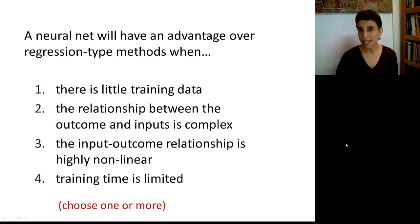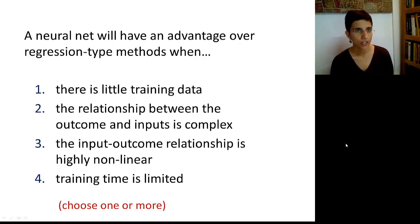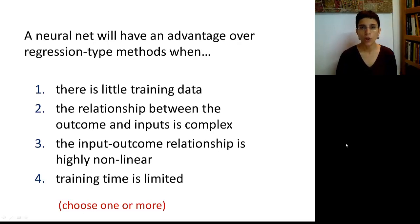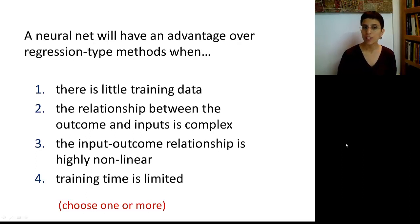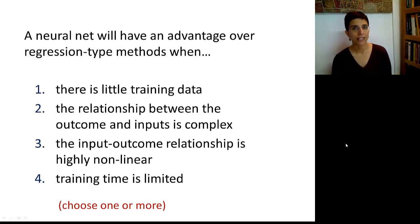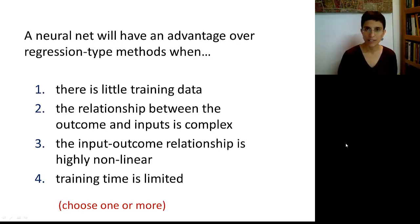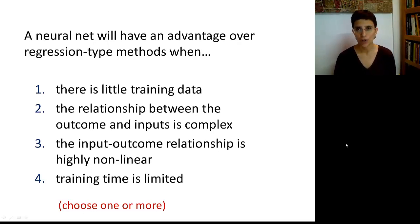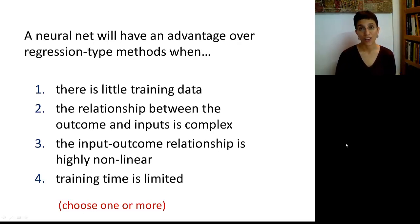To make sure you got the main points regarding neural nets, see if you can answer this question: a neural net will have an advantage over regression type methods when — there is little training data; when the relationship between the outcome and inputs is complex; when the input-outcome relationship is highly nonlinear; when the training time is limited. You can choose one or more and figure out which are correct answers, and importantly, why the correct answers are correct.